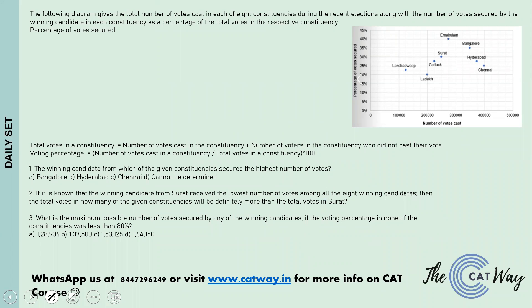Let us move towards the question. The diagram gives the total number of votes cast in each of the eight constituencies during the recent elections, along with the number of votes secured by the winning candidate in each constituency as a percentage of total number of votes in the respective constituency.